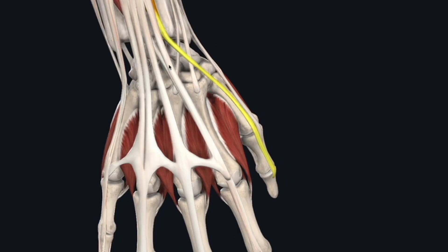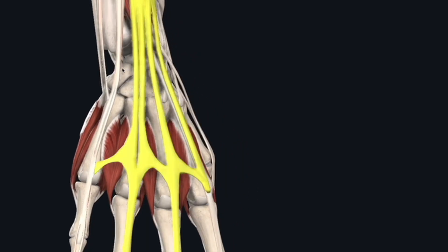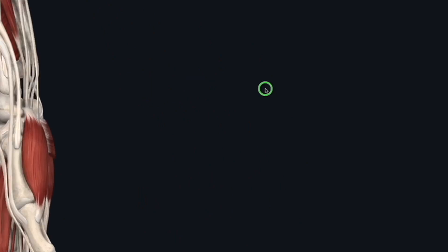What's in the middle of the anatomic snuff box? The scaphoid — we talk about that in the other video. As you come across into the fourth dorsal compartment you have your extensor digitorum communis, and coming further across you have your extensor digiti minimi, and then the extensor carpi ulnaris, which is another wrist extensor on the ulnar side of the wrist.